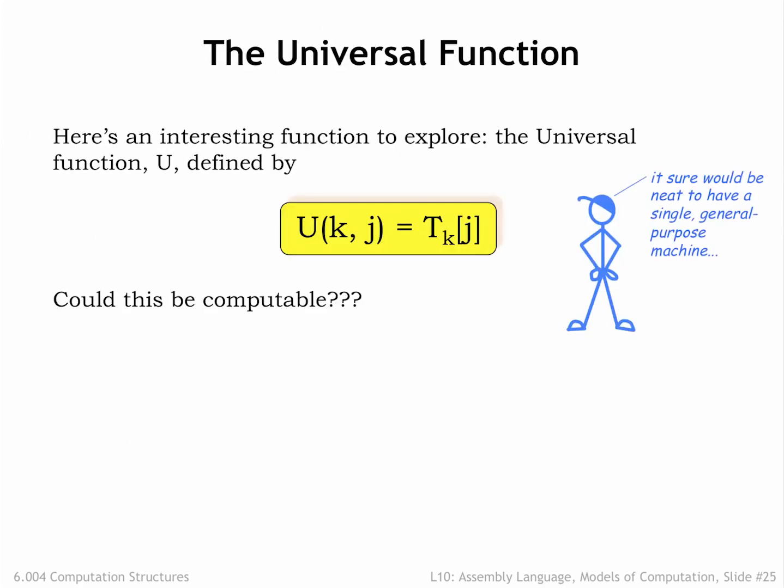What we'd like to find is a universal function u. It would take two arguments, k and j, and then compute the result of running Turing machine k on input j. Is u computable? In other words, is there a universal Turing machine T_u? If so, then instead of many ad hoc Turing machines, we could just use T_u to compute the results for any computable function.